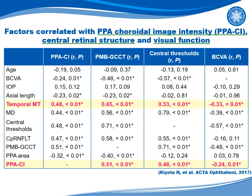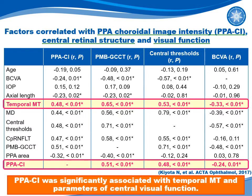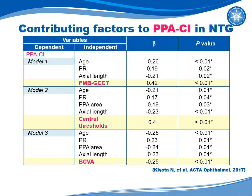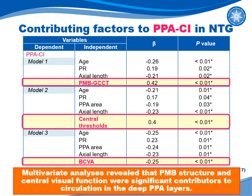This slide shows the factors correlated with PPA-CI, central retinal structure, and visual function. We found that PPA-CI was significantly associated with temporal disc optic blood flow and parameters of central visual function, including central visual threshold and visual acuity. The multivariate analysis revealed that PMB, GCC thickness, and central visual function were significant contributors to the circulation of deep PPA layers.